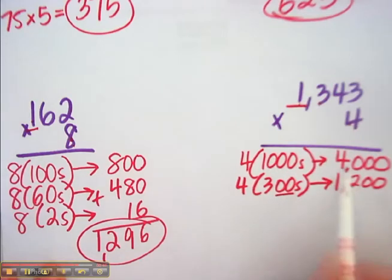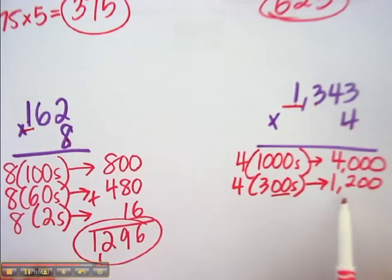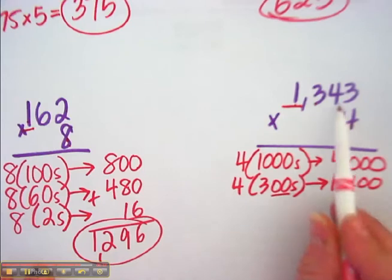is because the friends did not line up their digits. And they just added whatever they saw. And then that was confusing and it didn't work. Okay. The next one. 4 40s.